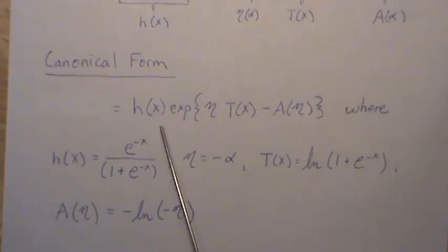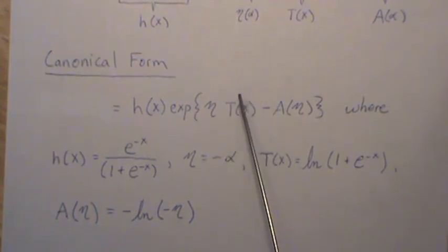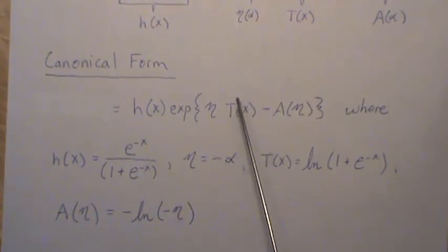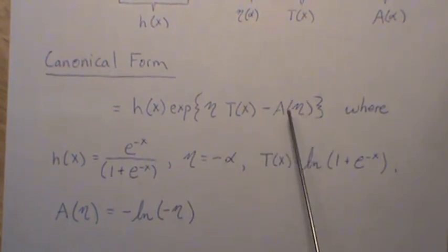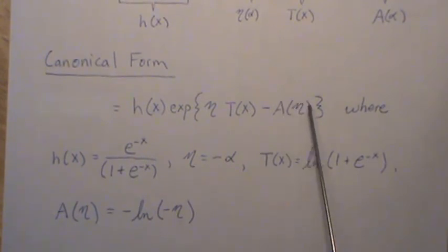So this is it. So this is a general form. Now, the very cool part about this, or at least in my mind, is the mean of our sufficient statistic is actually the first derivative of this log partition. The variance of this is the second derivative of this log partition.